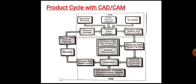At this stage, a complete description and information of the product and its components is available in the CAD/CAM database. Step 4 is computer-aided process planning. Using the geometric model of the product stored in the database, computer-aided process planning, or CAPP, is carried out.